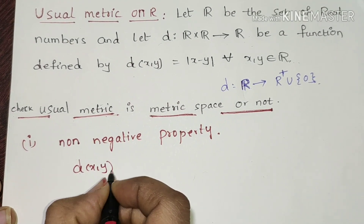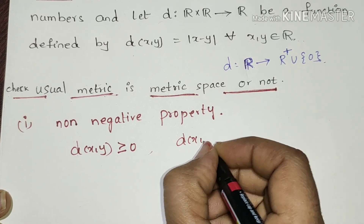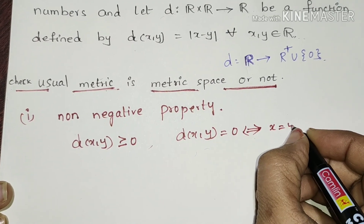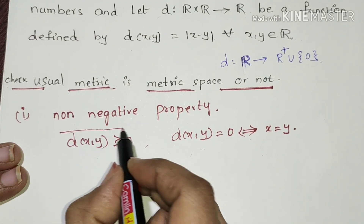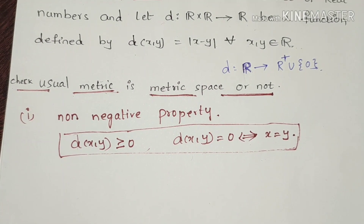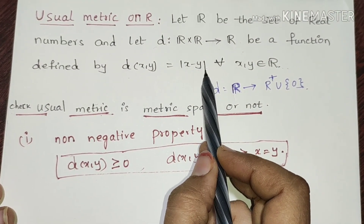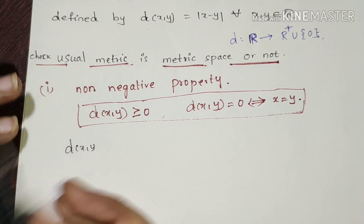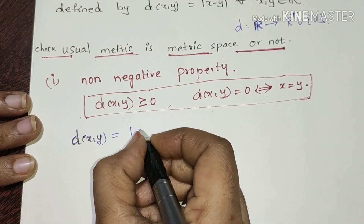This is the problem in Usual Metric Space. Here we will define the distance of x, y, and the distance of x, y is equal to modulus of x minus y.